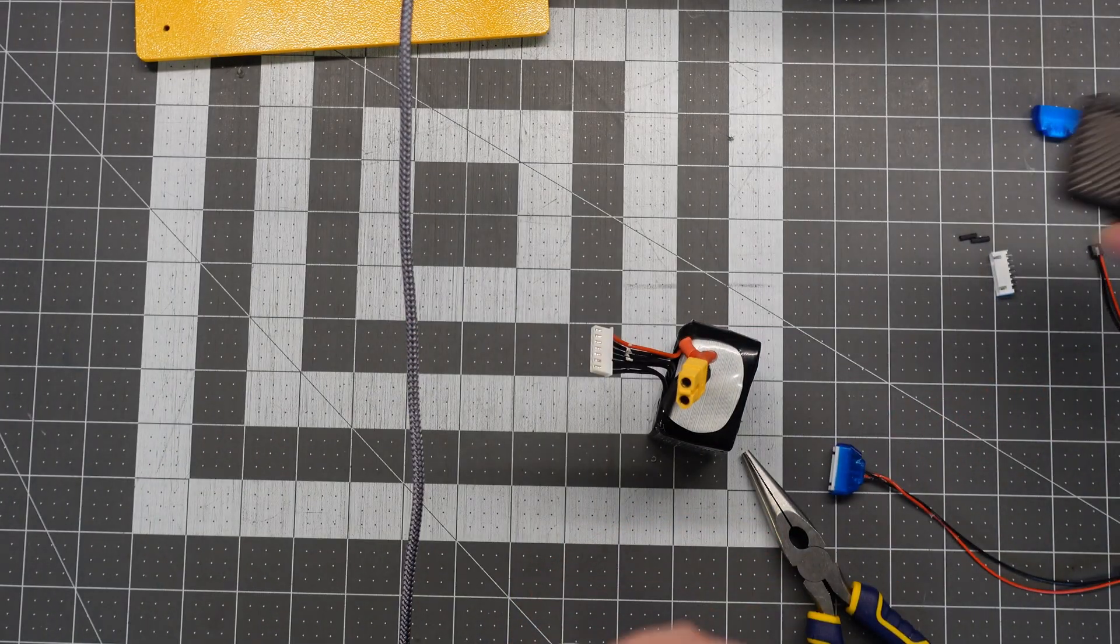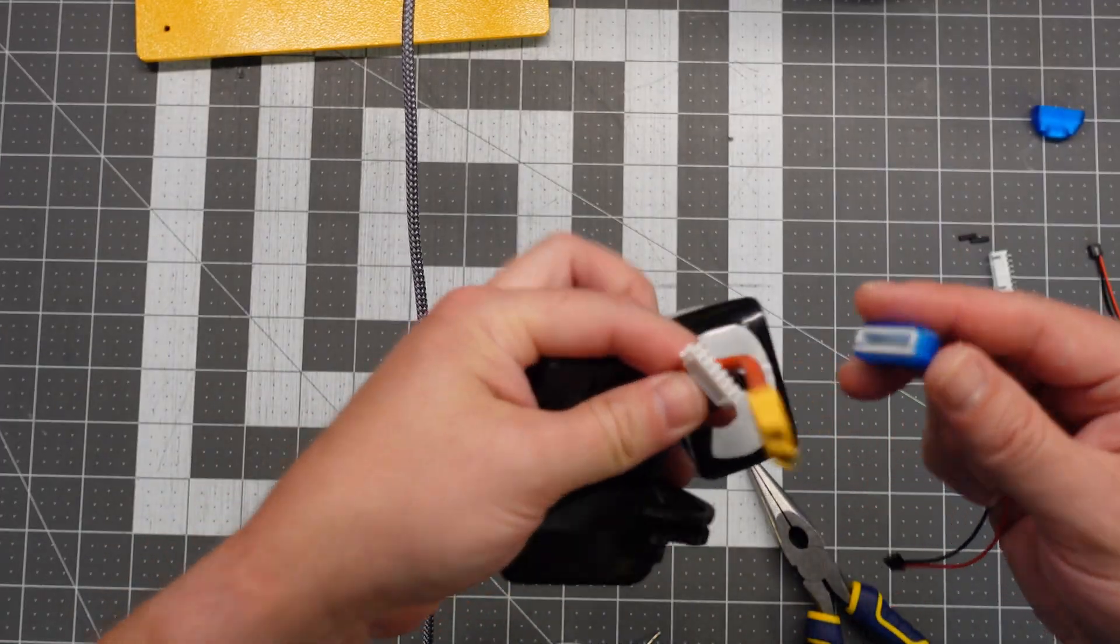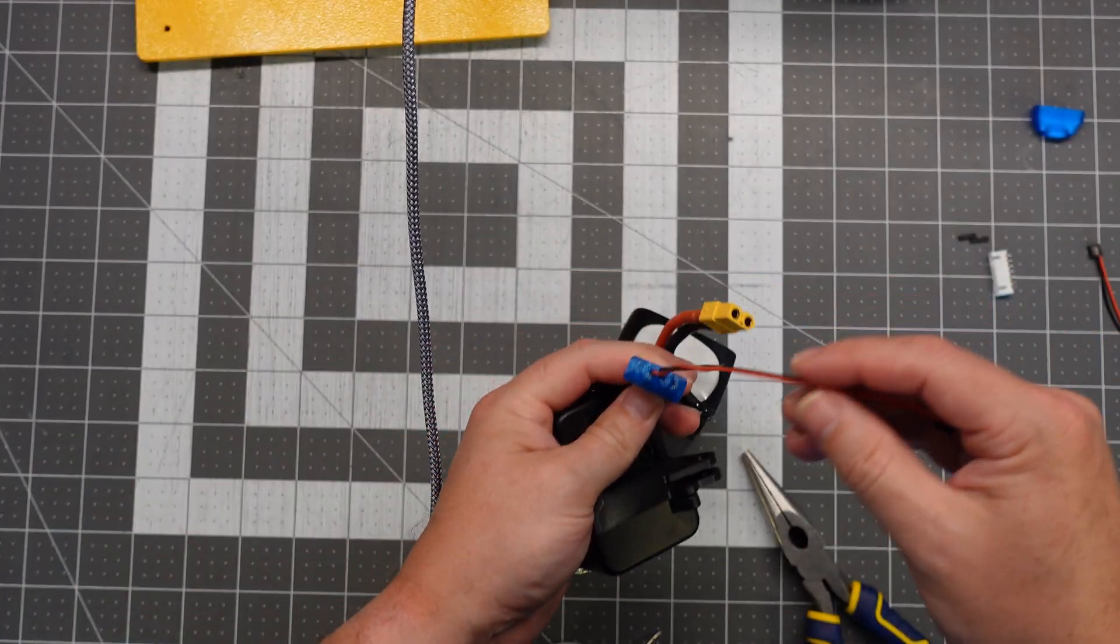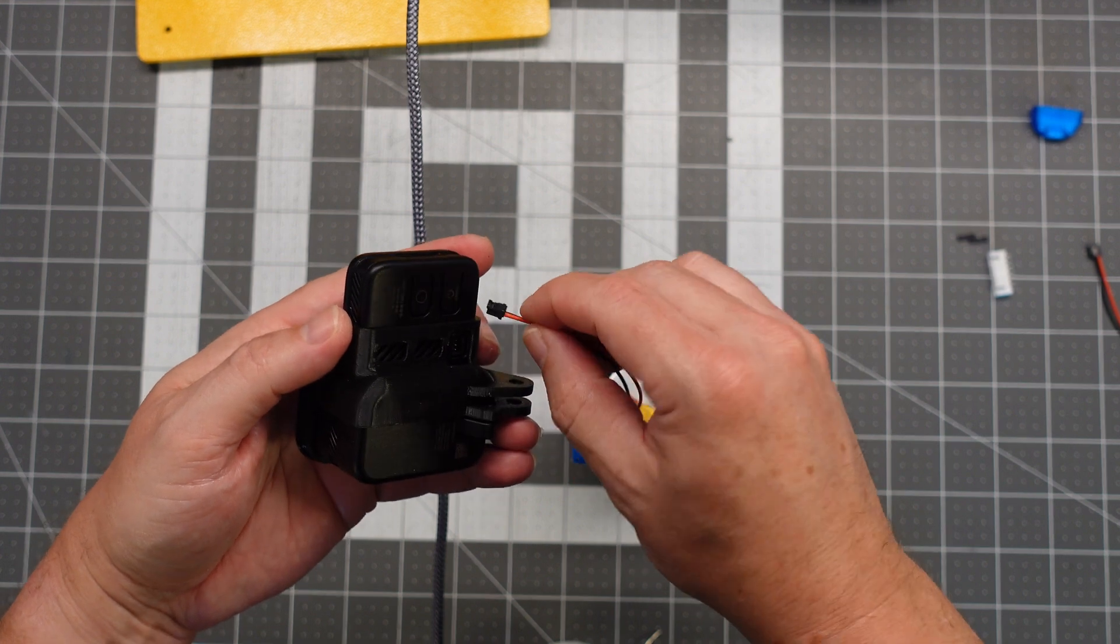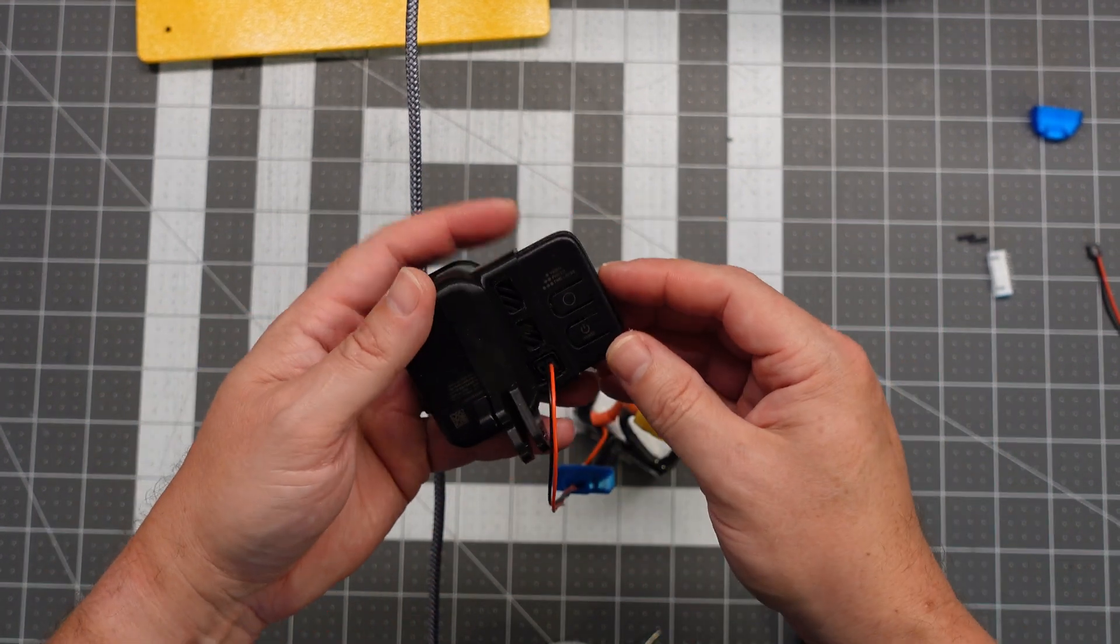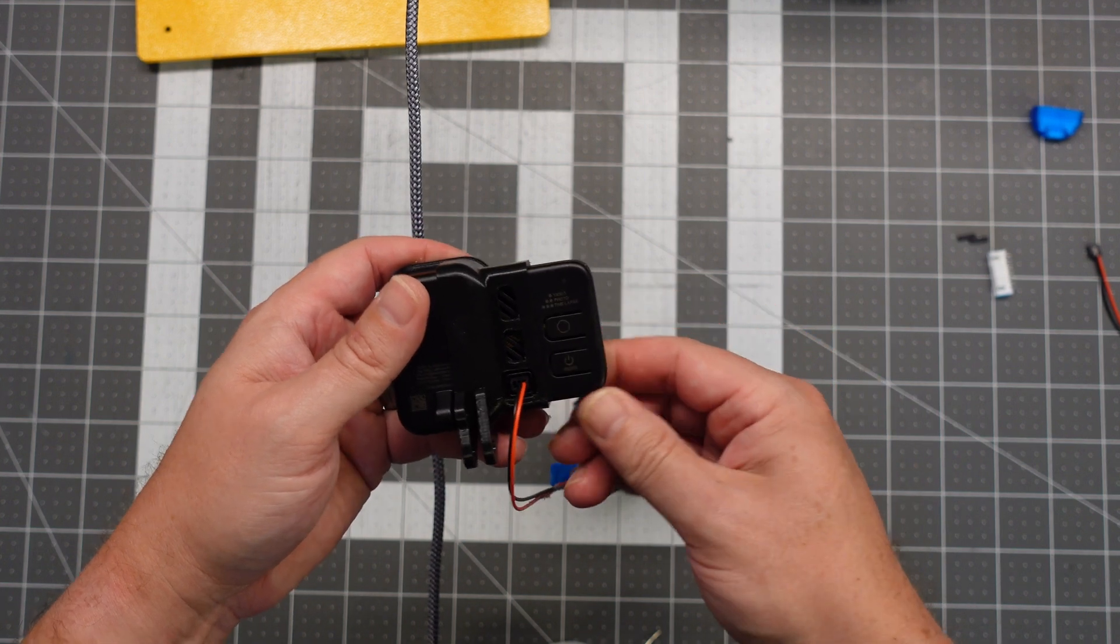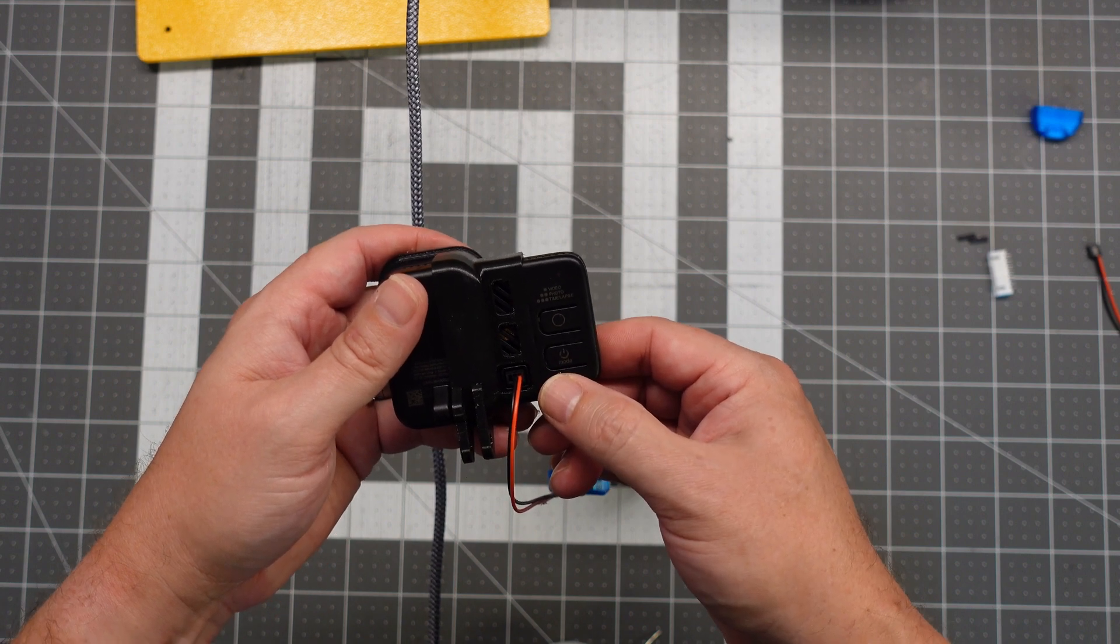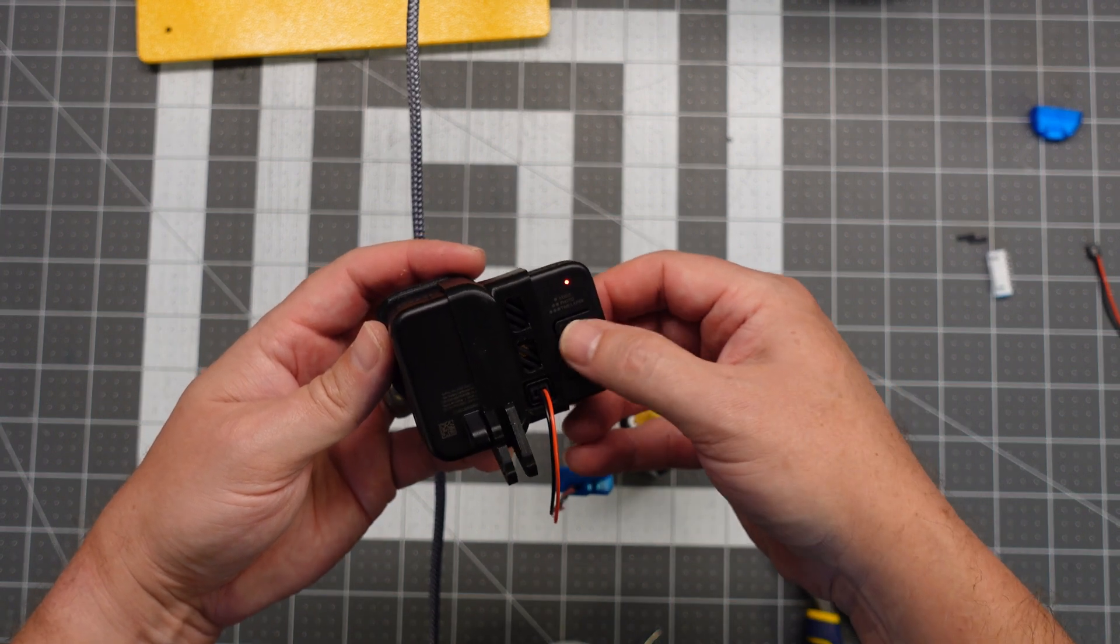6 cell LiPo. We do need our camera. Go ahead and plug this into the balance lead of our LiPo. Just like so. And we will go ahead and plug this in. And you'll see we will get a power light. That means the BEC is powered. Go ahead and power it on. There we go. And we will start recording. And we are good to go.